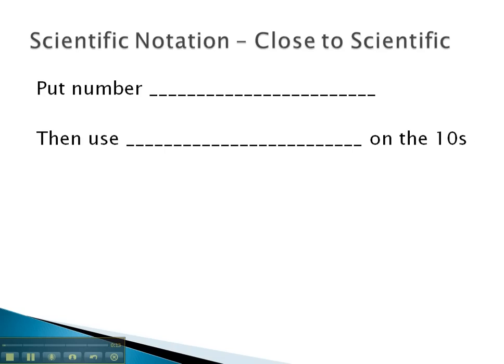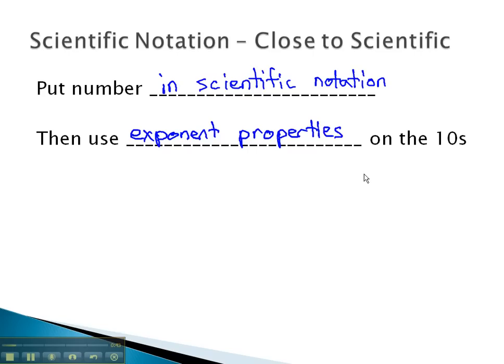When we're close to scientific notation, we will put the number that's not in scientific notation in scientific notation. When we do, we will often have several tens at the end of the expression. We will then use our exponent properties on the tens, usually by adding the exponents.